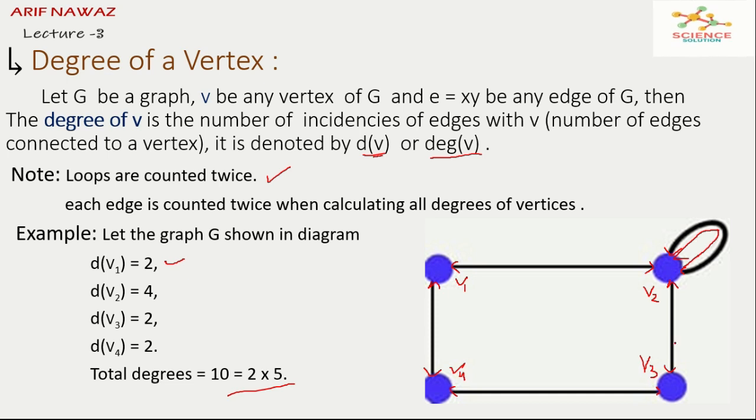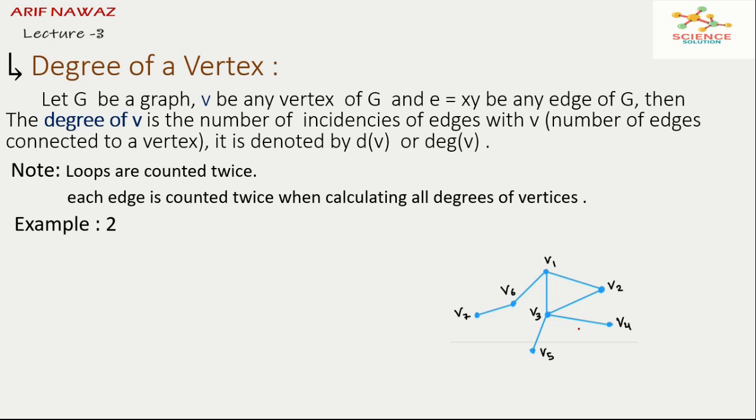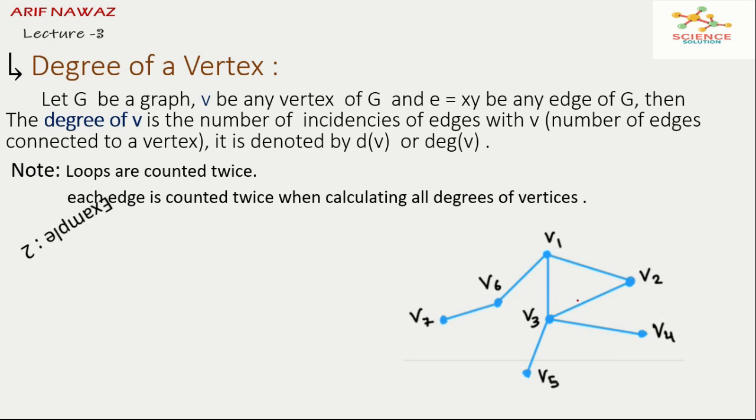We have also another example. By the diagram we see there are seven vertices and seven edges in total. If we see the degree of V1 that is three because three edges are joining with vertex V1. So the degree of vertex V1 will be three.